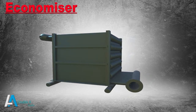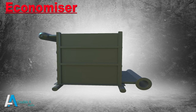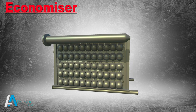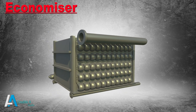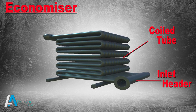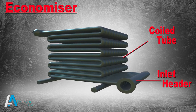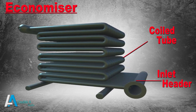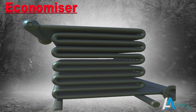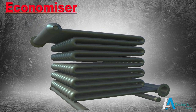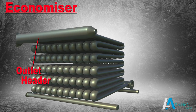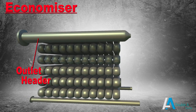The flue gases coming out of the boiler contain a large amount of heat. To recover this heat, the economizer gets installed in the flue gas path before the exit of the boiler. It saves energy by recovering heat from hot flue gases and utilizing it to preheat feed water.